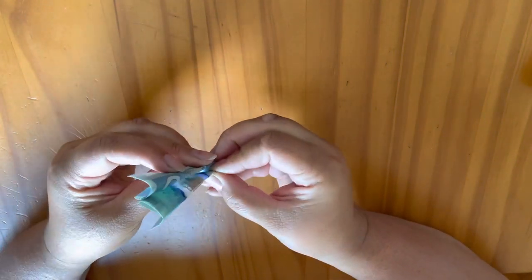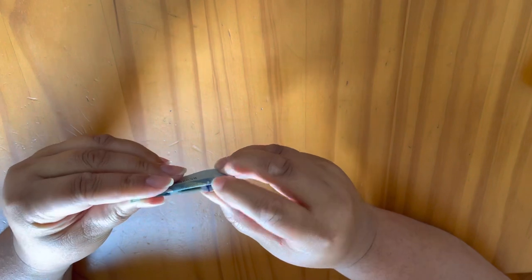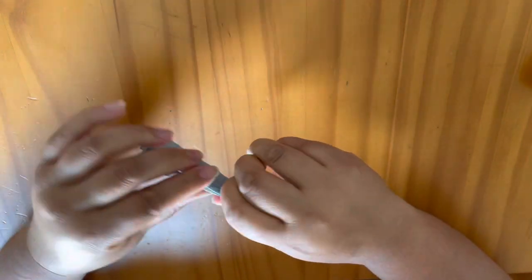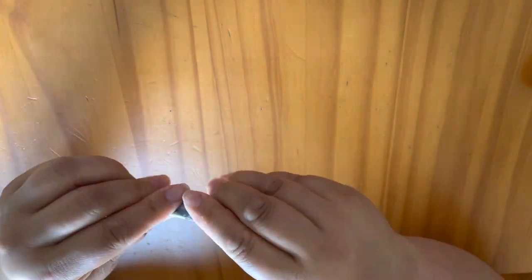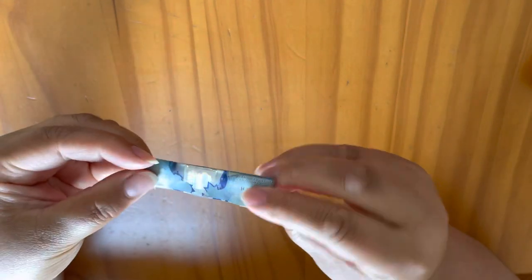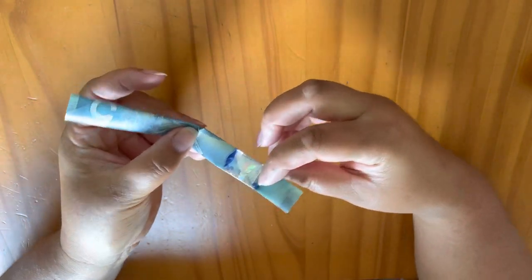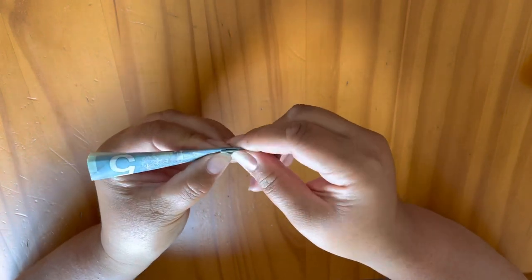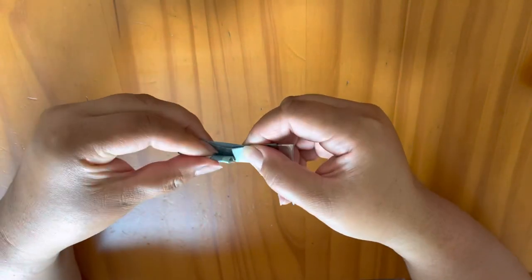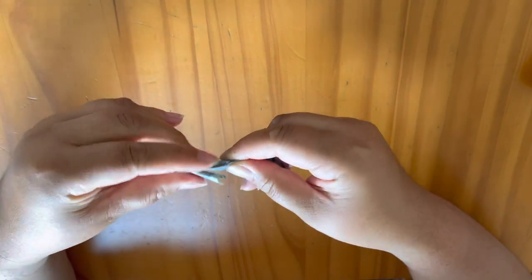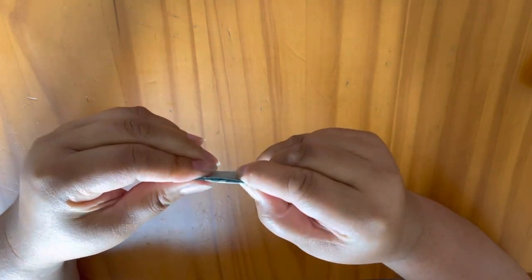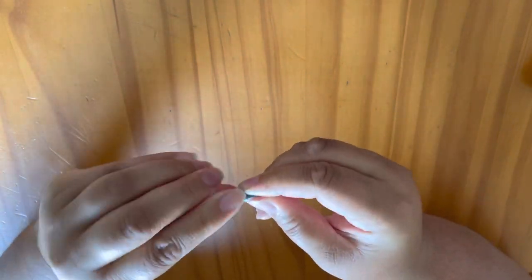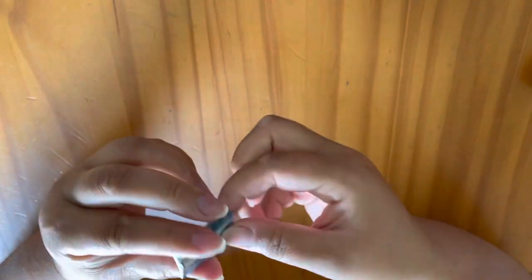From here we're going to fold it in half widthways so you get the middle crease right in half. Make sure it's nice and tight. And you'll open it back up and fold one side in to meet at the middle. Just like this. And you'll do the same thing on the other side. And then you could fold it right back in half again. And this is your end piece for each bill.